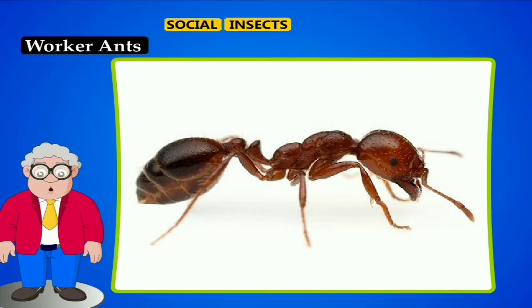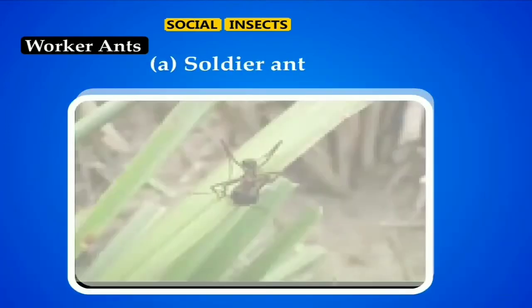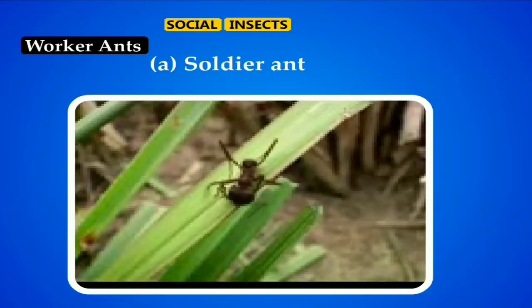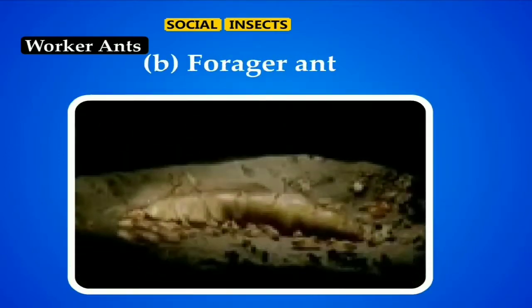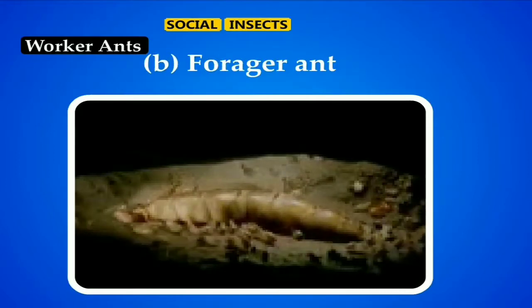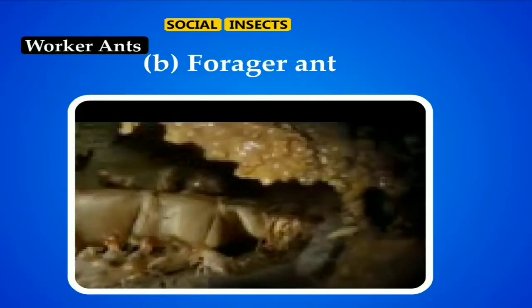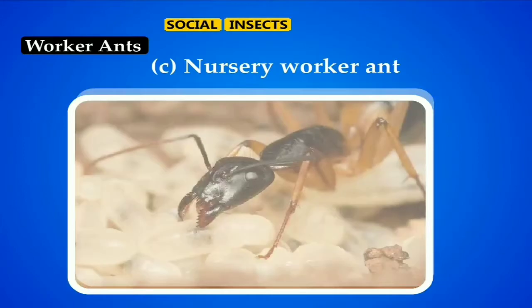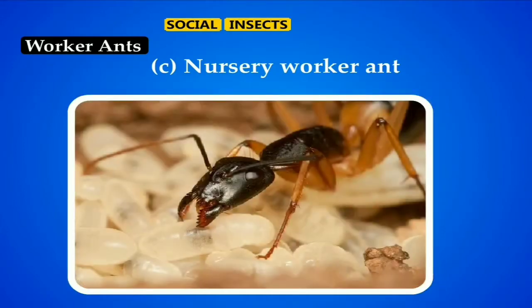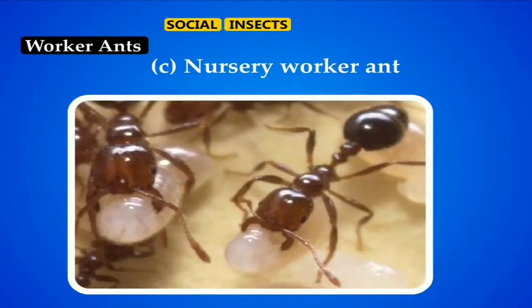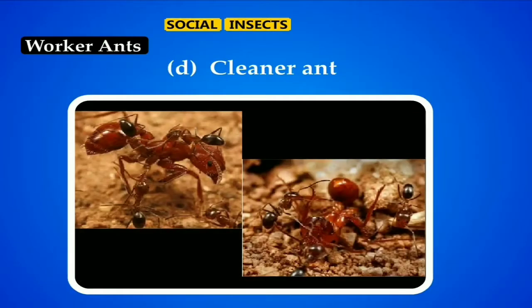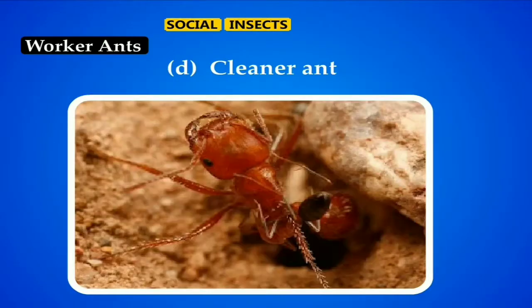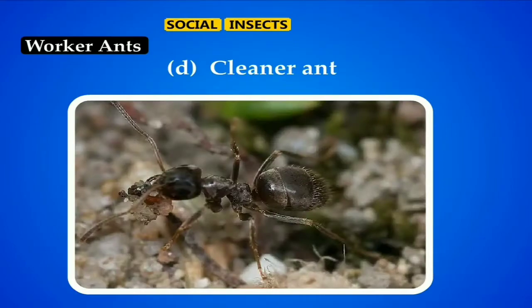There are different types of worker ants in a colony. A: Soldier ant — a soldier ant guards the opening of the nest to prevent enemies. B: Forager ant — a forager ant has to leave the nest in search of food. C: Nursery worker ants — they take care of the larvae that hatch from the eggs. D: Cleaner ant — a cleaner ant is responsible for cleaning the entire ant nest.